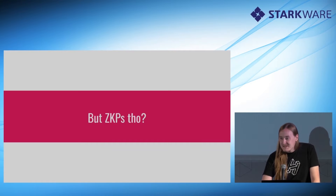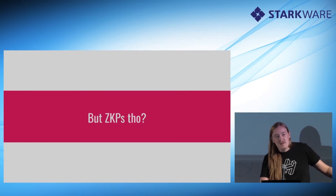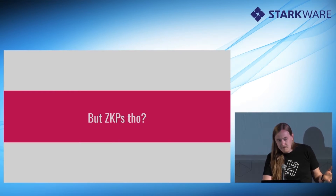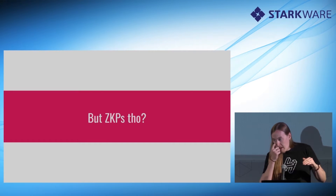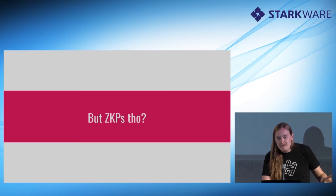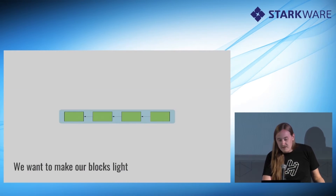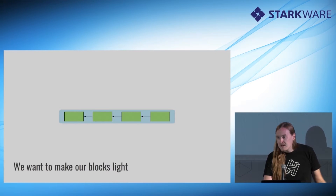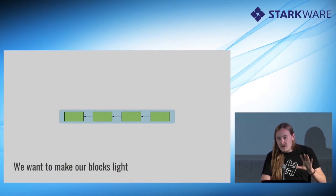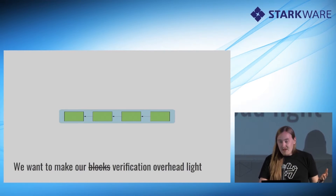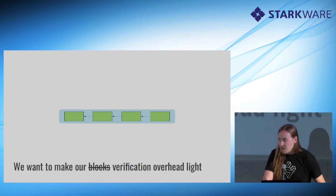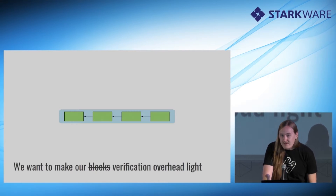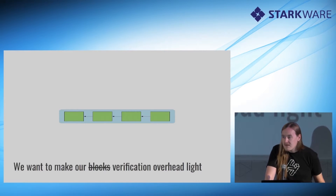So how do ZKPs fit into this? We've talked a little bit about public verifiability. We have another term: observability — it takes public verifiability and adds the question of what is an objective fact that we can practically verify on-chain. We want to make our blocks light so that we can observe them from within a chain. If it's too heavy, we can't observe it; if it uses randomness, we can't observe it because it's not publicly verifiable. So we don't actually need to make the blocks themselves light — we need to make the verification overhead of those blocks light. That's where ZKPs come in and are really useful.